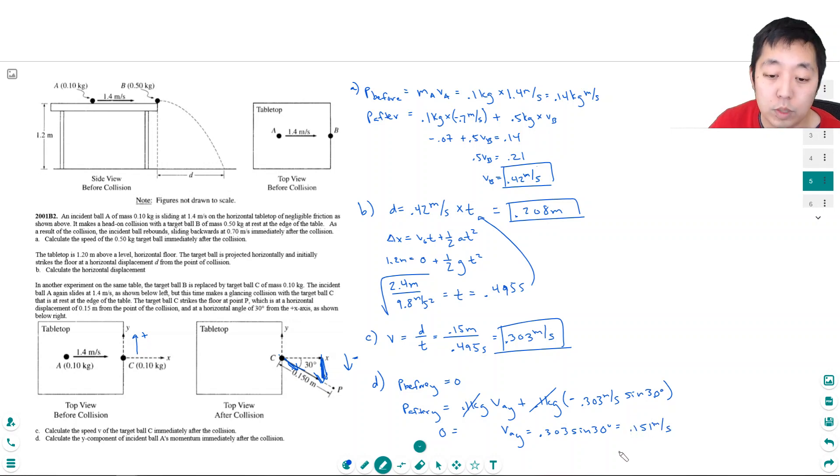Oh, they want the momentum, so I gotta multiply this by mass. So the momentum p is equal to 0.1 kilogram times 0.151 meters per second.